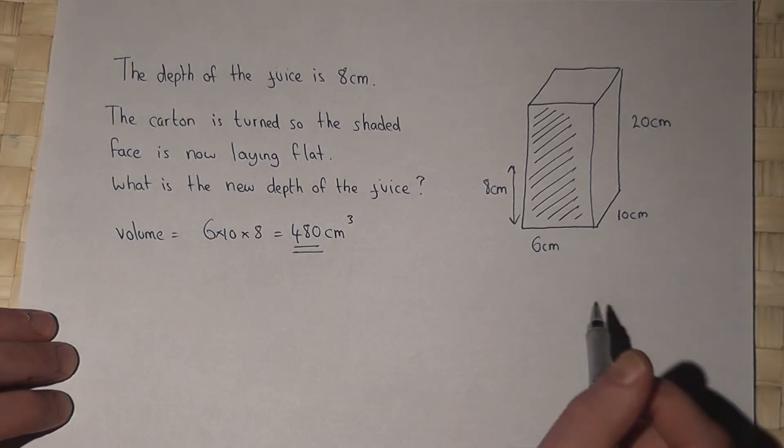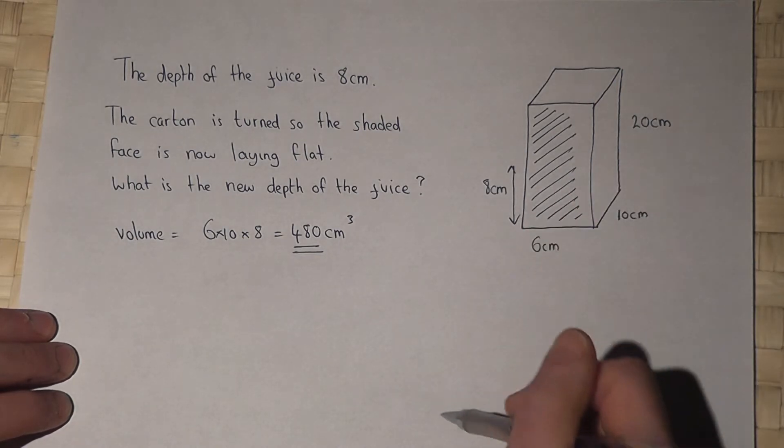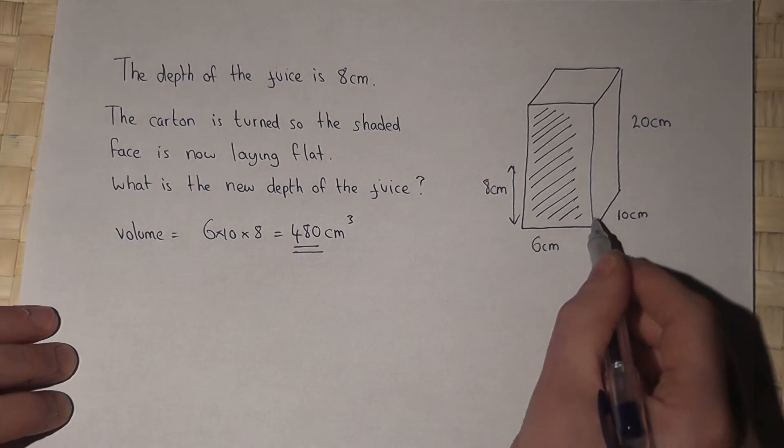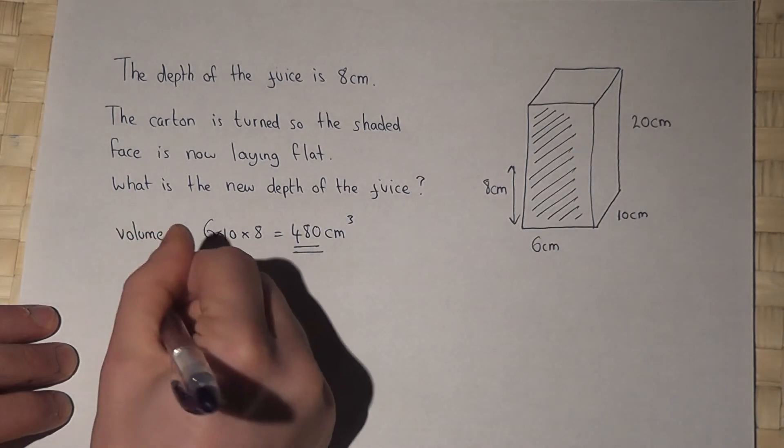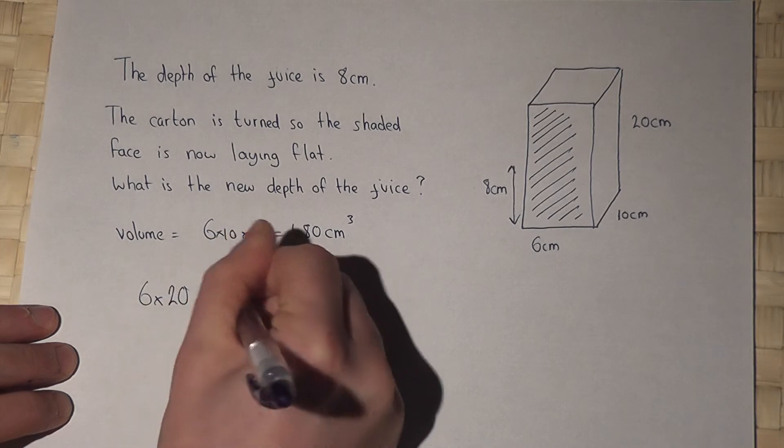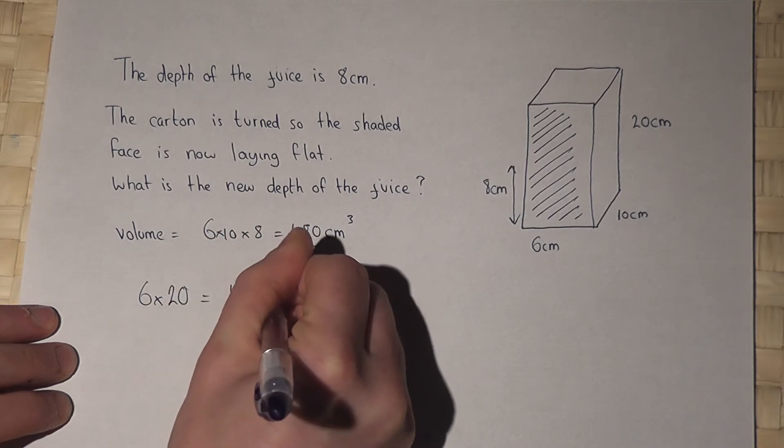Now the new base of the carton, when it's been spun around, is 6 times 20. Now 6 times 20 is 120 centimetres squared.